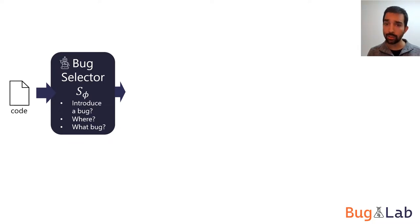It then selects the location and concrete form of a bug to introduce, if any. For example, a selector may decide to change a plus to a minus, or to change a variable usage from J to I, or to leave the code snippet untouched.